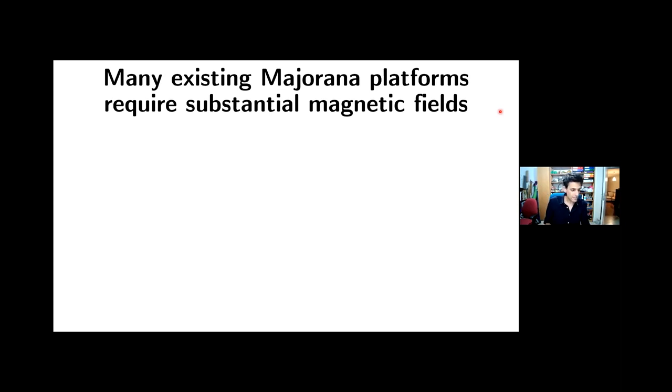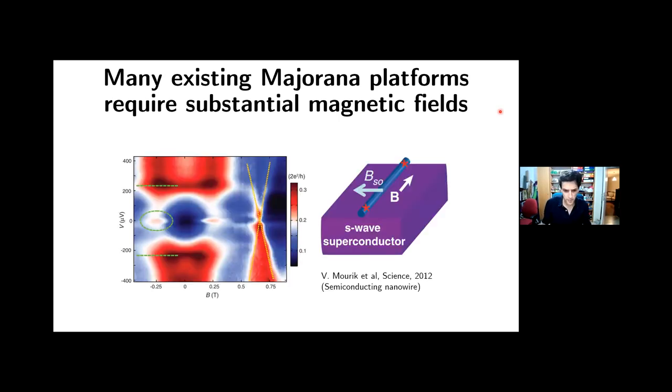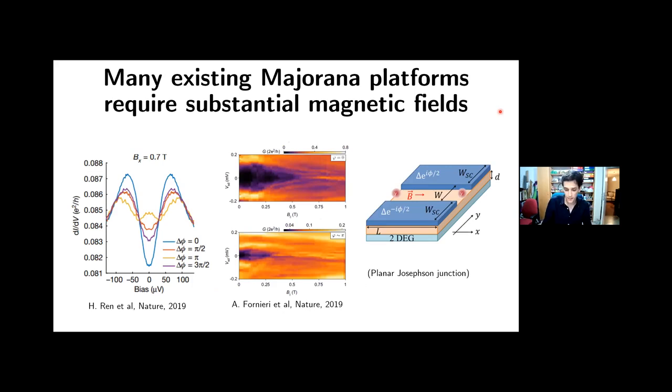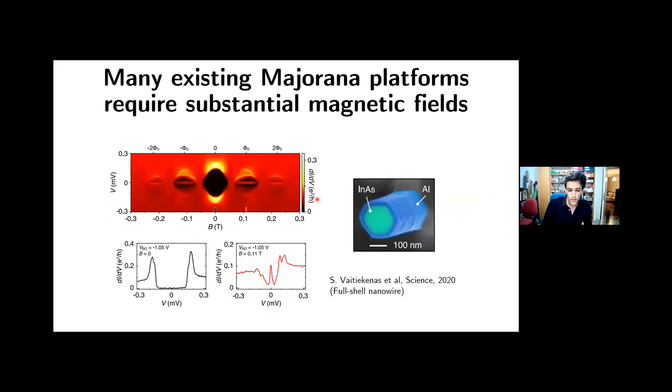In practice, many of the prominent proposals require pretty substantial magnetic fields. Let me just flash some examples. This is the first experiment on nanowires proximitized to superconductors, and here the required field is of the order of 200 or 300 millitesla. This is the planar junction device, and here again, the fields are of the order of half a Tesla. And here in one of the most recent proposals of the full shell nanowires we've just heard quite a lot about, you still need something like 100 millitesla.